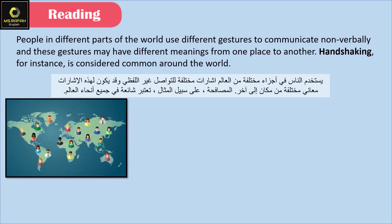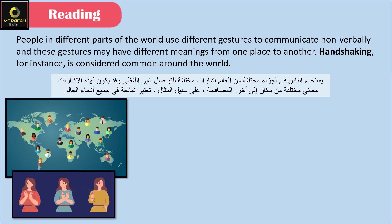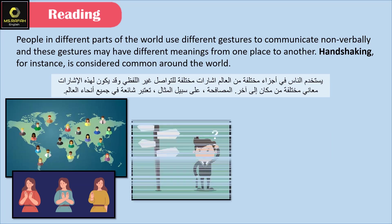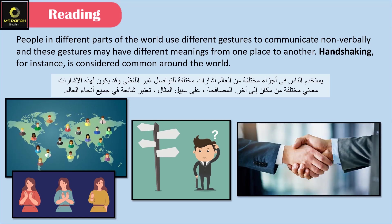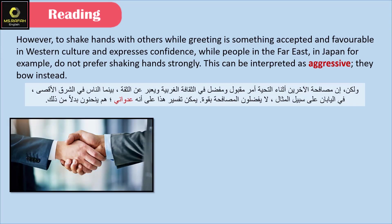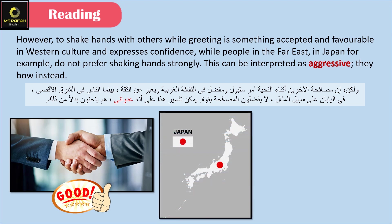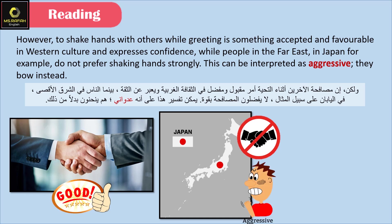People in different parts of the world use different gestures to communicate non-verbally, and these gestures may have different meanings from one place to another. Handshaking, for instance, is considered common around the world. However, shaking hands firmly is accepted and considered favorable in Western culture, expressing confidence, while people in the Far East — in Japan, for example — don't prefer shaking hands strongly, as this can be interpreted as aggressive. They bow instead.